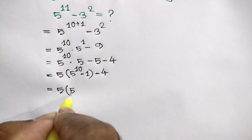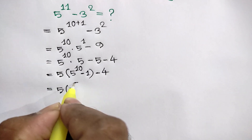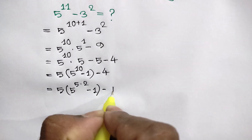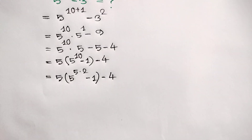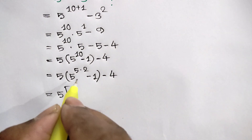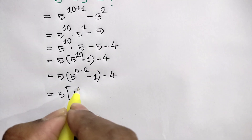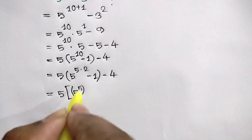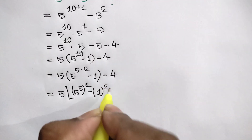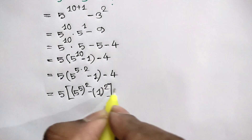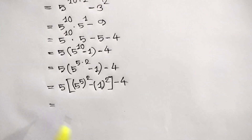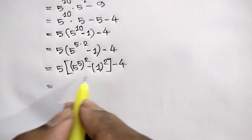Now 5 times 5 to the power 10 — the exponent 10 can be written as 5 times 2 — so we can write 5 to the power 5, whole squared, minus 1 squared, and this negative 4. Here we can use the algebra formula for difference of squares.